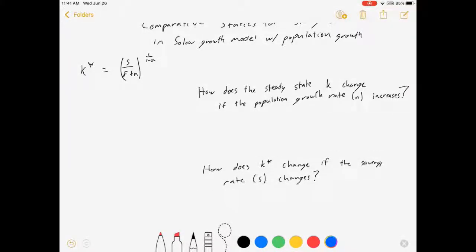So how are we going to answer these kinds of questions? Based on our model, we can do what's called comparative statics. I am interested in how does k change if n increases. To answer that question, I'm going to take the derivative of k star with respect to n.